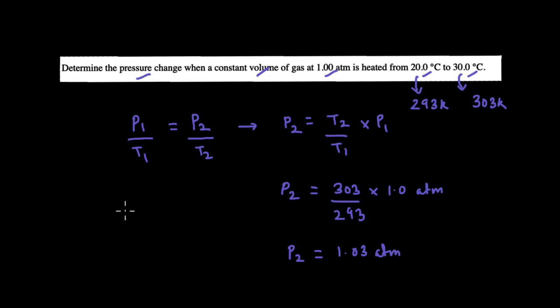And then to calculate the pressure change, what we are going to do is the pressure change will be equal to P2 minus P1, which is this 1.03 minus the initial pressure, which is 1 atm. And we get the pressure change to be 0.03 atm.